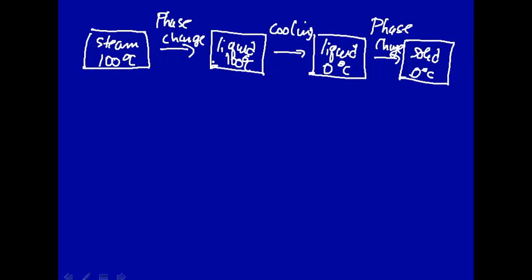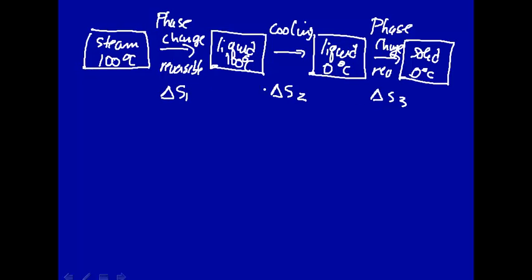Phase changes occur at constant temperature — temperature doesn't change. The heat you transfer during a phase change, say from frozen to liquid or liquid to frozen, is actually a reversible process. It doesn't do any work, but it is reversible. We can also think of a reversible process for cooling the liquid. So let's calculate each step: delta S1, delta S2, and delta S3. Since entropy is a state function, the total entropy change is just the sum of those three.